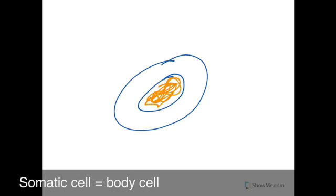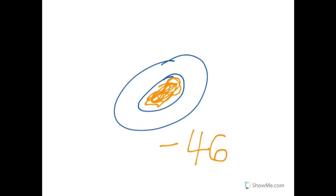So all somatic cells in our body, which means all our body cells, like skin cells and liver cells, they're going to undergo mitosis and generally have 46 chromosomes. So we call this 2n, and we can also call this a diploid cell, diploid.